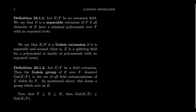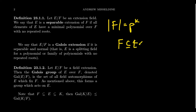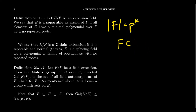Why are finite fields necessarily going to give separable extensions as well? Imagine we have a finite field of order p^k. We can view this as a finite extension of the field ℤ_p. You can also argue that if you have a chain of fields F ⊆ E ⊆ K, and K is separable over F, then E is also separable over F, and K is separable over E.